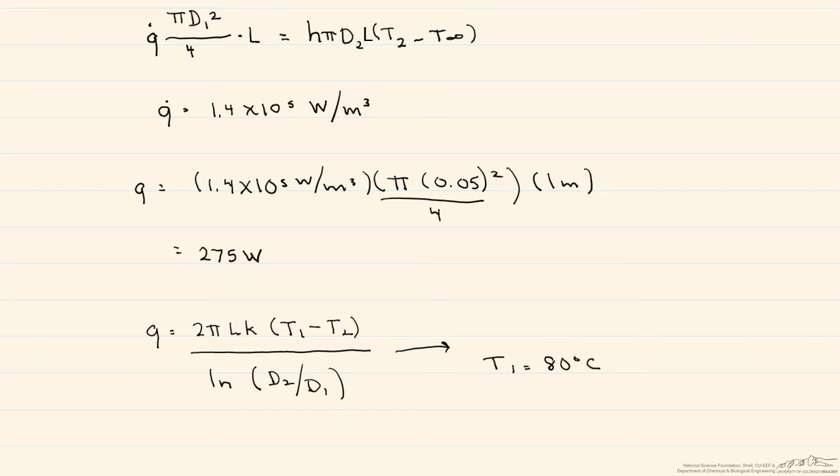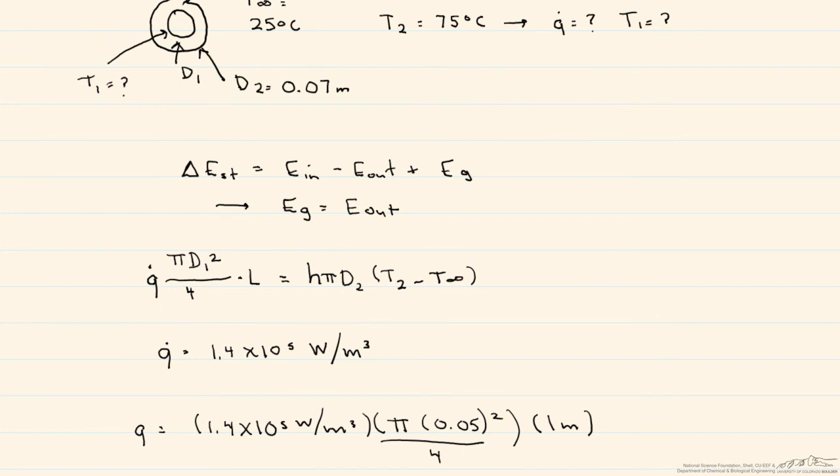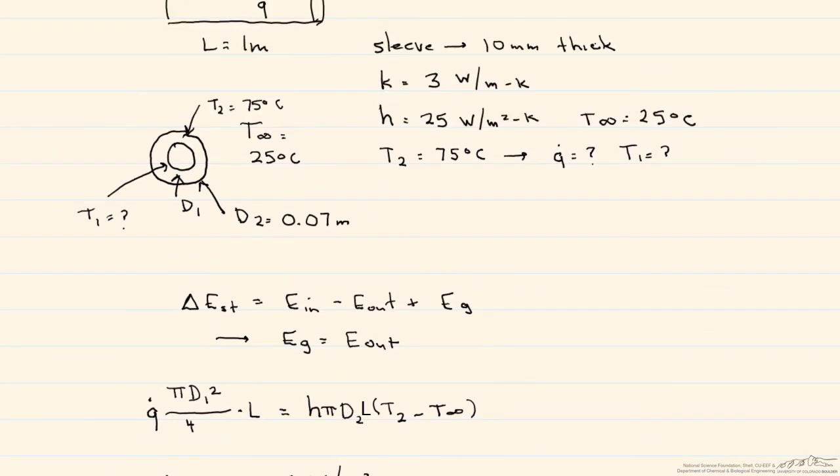And if you take a look at our different temperatures, that makes sense. Our outside temperature was 75 degrees C, our inside temperature is higher at 80 degrees C, and then our temperature of the bulk air is 25 degrees C.